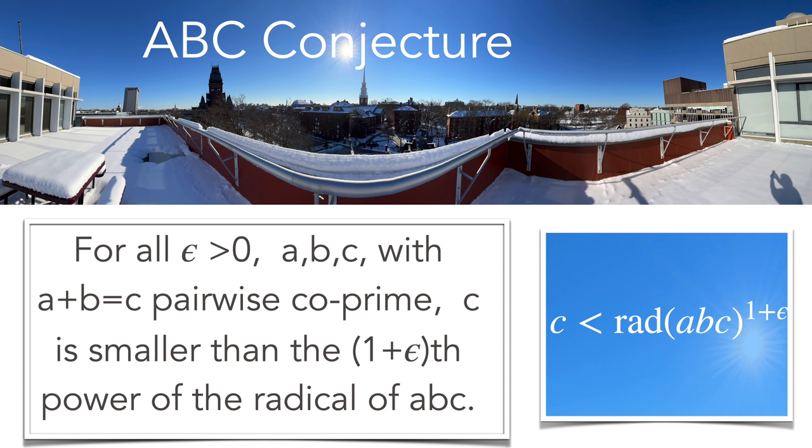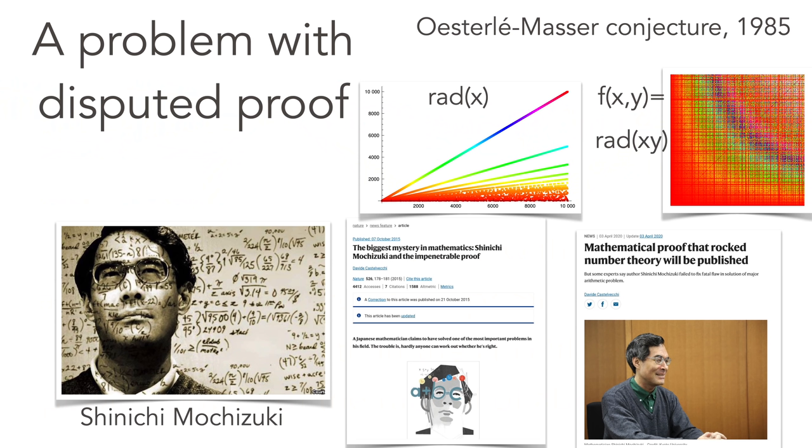The ABC conjecture is relatively young, a little bit more than 35 years old. It would have profound implications in number theory. The radical of a number is the product of the primes which occur in the prime factorization without counting primes many times. For example, the radical of 12 is 2 times 3. The question is if you have ABC such that A plus B is equal to C, then the question is how can you relate C with the radical of ABC. It's a problem with disputed proof, became news over the years.